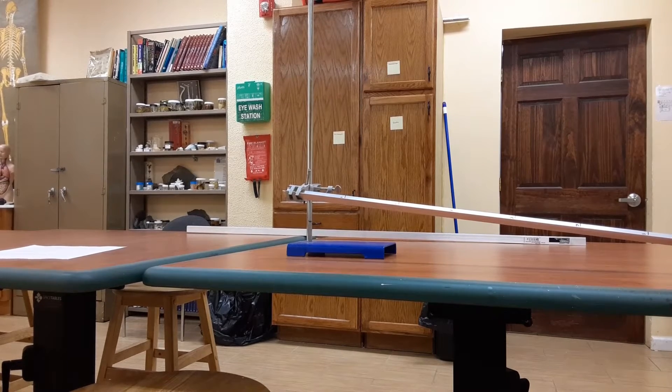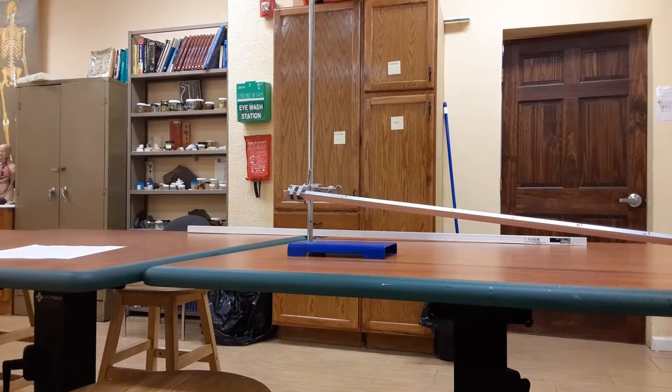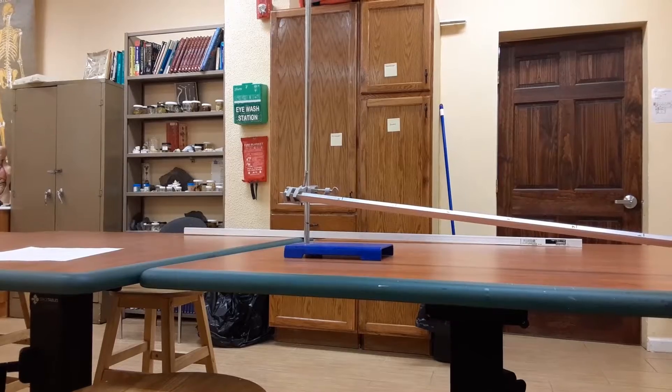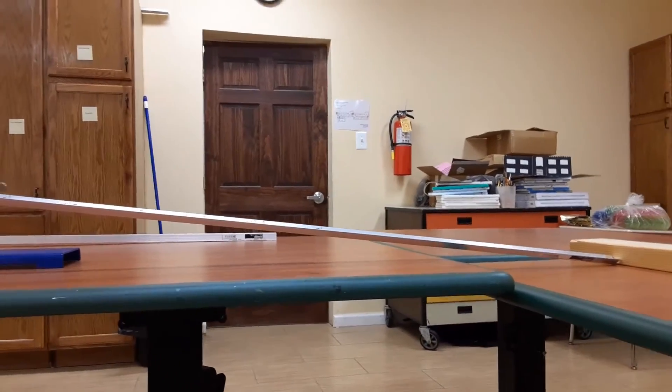The apparatus that we need for this lab is a stand, and that stand is to clamp one end of the angle higher than the other end. Then we have an aluminum angle, and at the end of the angle, we have a block of wood.